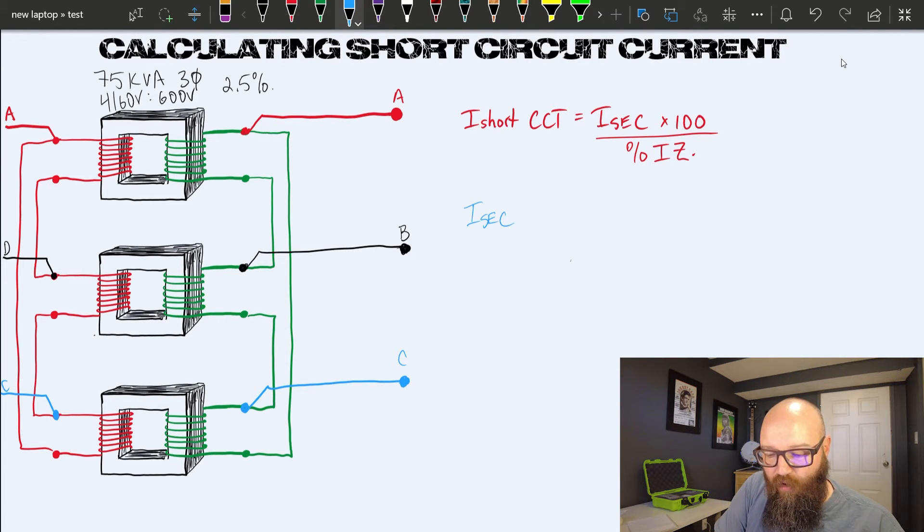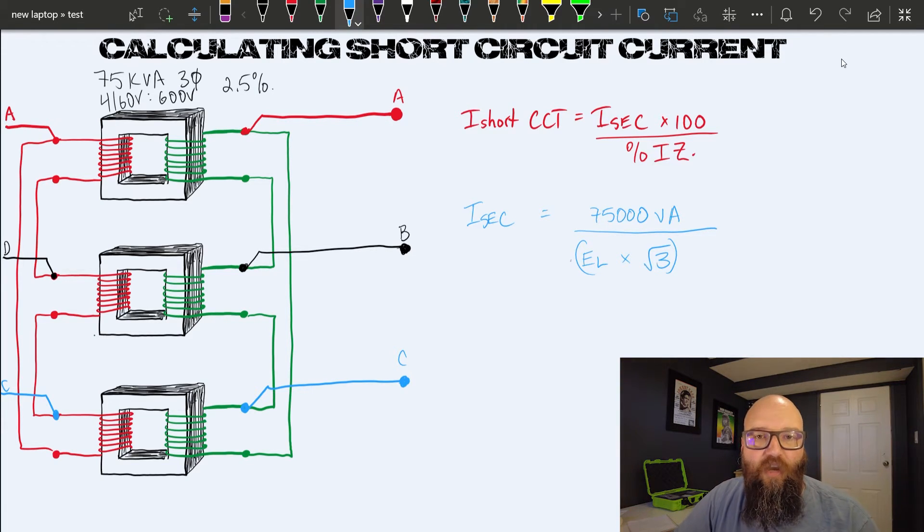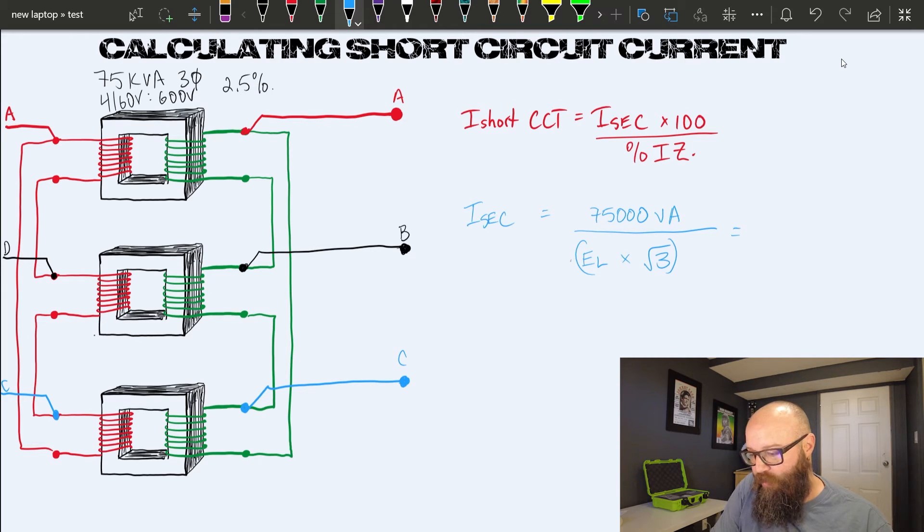The current on the secondary equals the kVA rating of the transformer—75,000 VA—divided by E line times root three, because it is a three-phase transformer. If you're punching this into your calculator, it's crucial that you don't forget those brackets so your calculator follows the proper sequence of operations. So 75,000 divided by E line times root three gives us around 72.17 amps. That is my rated secondary current on this transformer.